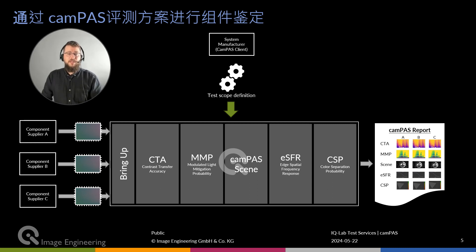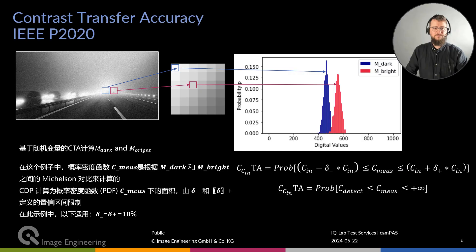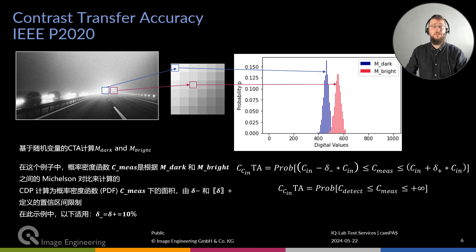We will go over the key performance indicators in the next slides. In my personal opinion, contrast transfer accuracy — CTA — is one of the main KPIs when evaluating an image sensor, simply because it provides a broad overview of the system's performance in a wide variety of situations. To understand how this works, we need to know that the camera can only detect objects if there is a non-zero contrast between the object and its background. With CTA, we present the camera system with a set of luminances and calculate the probability that the camera can differentiate between these luminances.